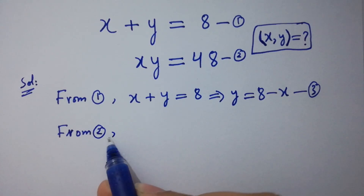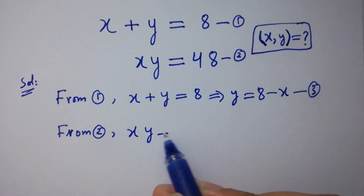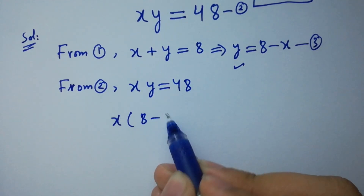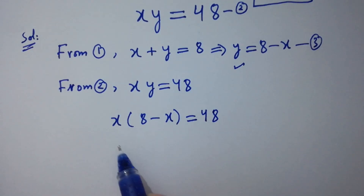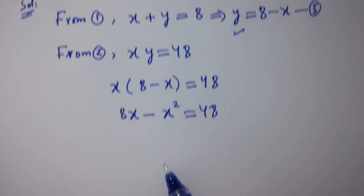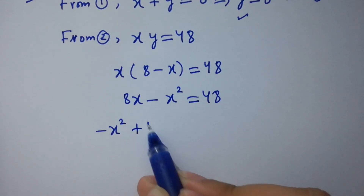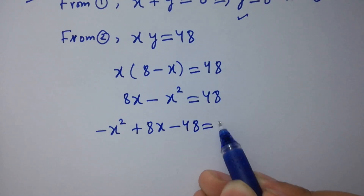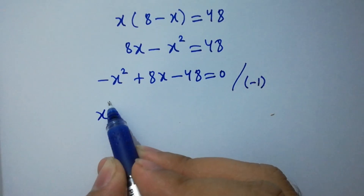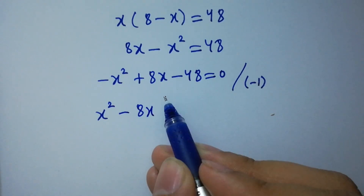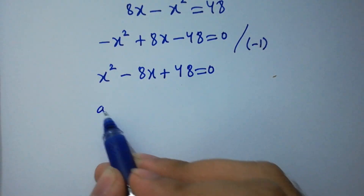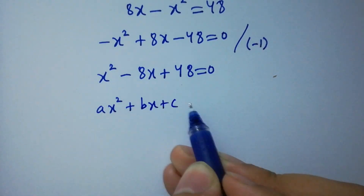From equation 2 we have x times y equal to 48. Substituting the value of y, we get x times (8 minus x) equal to 48, giving 8x minus x squared equal to 48. Rearranging: minus x squared plus 8x minus 48 equal to 0. Dividing by minus 1 on both sides: x squared minus 8x plus 48 equal to 0. This is a quadratic equation of the form ax squared plus bx plus c equal to 0.